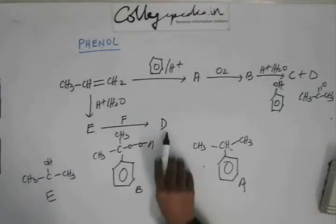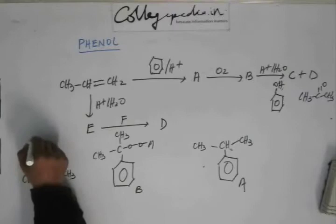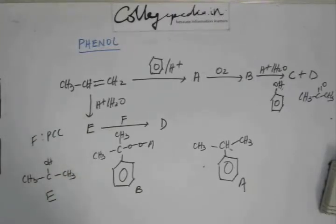Now once D is acetone, this D is acetone and E is this 2-propanol. Now you tell me the reagent that will give you acetone from 2-propanol. That reagent we have studied before in the chapter of alcohol. And that reagent is PCC. PCC converts 1° alcohol to aldehyde and 2° alcohol to ketone very conveniently without the risk of further oxidation to carboxylic acid.